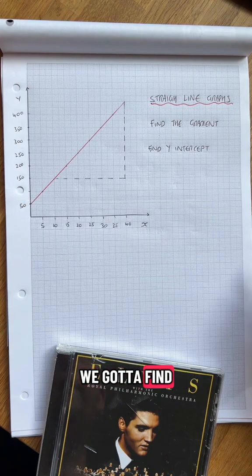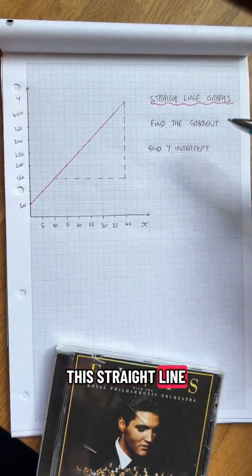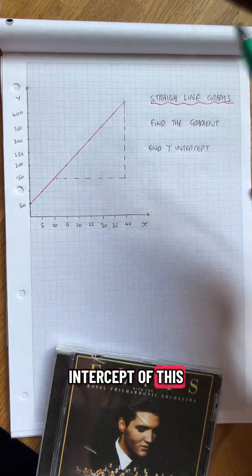Straight line graph. In this one we've got to find the gradient of this straight line and we've got to find the y-intercept of this straight line.